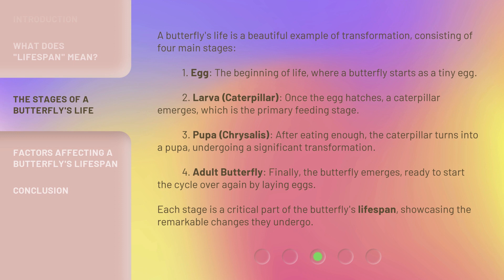Third, the Pupa, or Chrysalis — after eating enough, the caterpillar turns into a pupa, undergoing a significant transformation. Fourth, the Adult Butterfly — finally, the butterfly emerges, ready to start the cycle over again by laying eggs. Each stage is a critical part of the butterfly's lifespan, showcasing the remarkable changes they undergo.